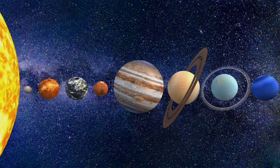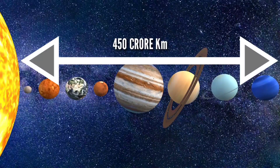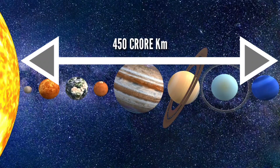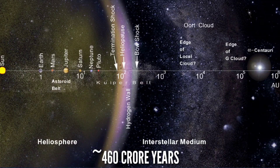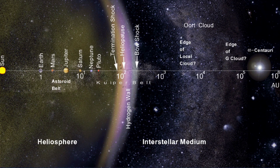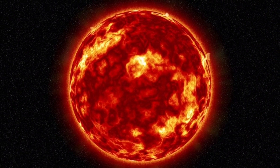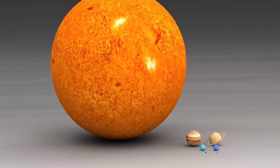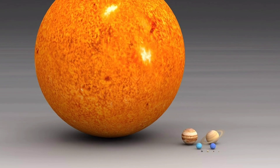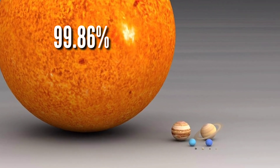This is our solar system. The sun is about 4.5 billion kilometers old. Our solar system is about 4.5 billion kilometers wide. This is the most massive object — the sun holds about 99.86% of the mass of the solar system.